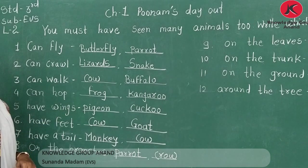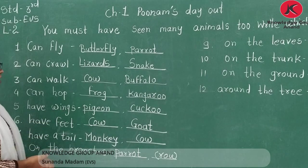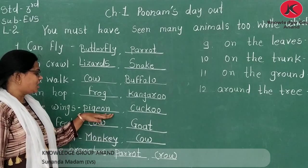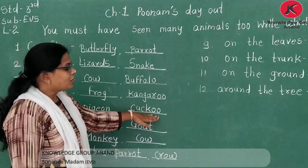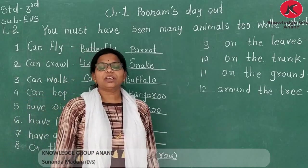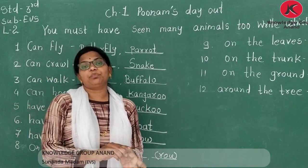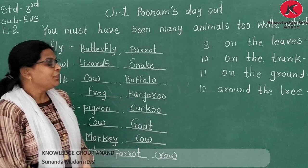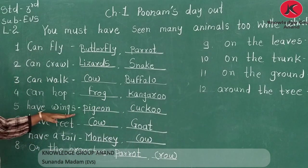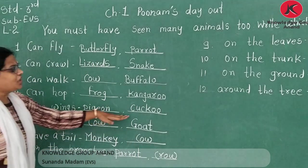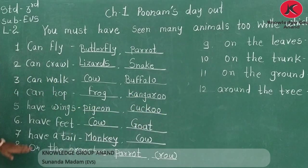Fifth number is 'have wings.' Jo animals jisko wings hain — vaise konse animals hain? Mentioned here are pigeon, kuku (cuckoo), and bohut saare animals hote hain jisko wings hote hain. Like sparrow, swan, etc. You can mention the animals you know here as extra.